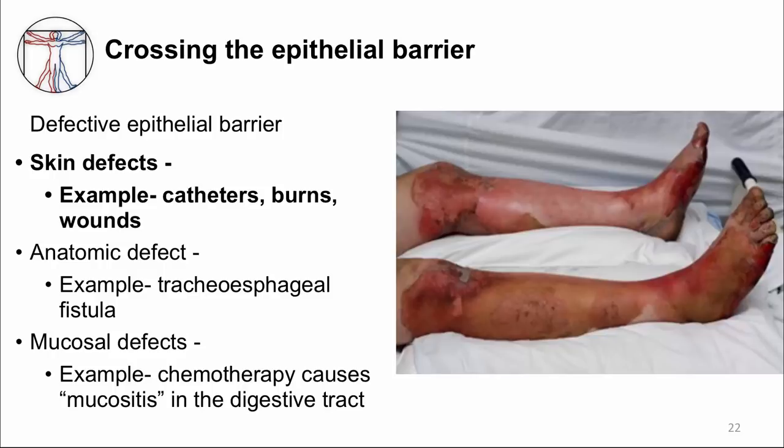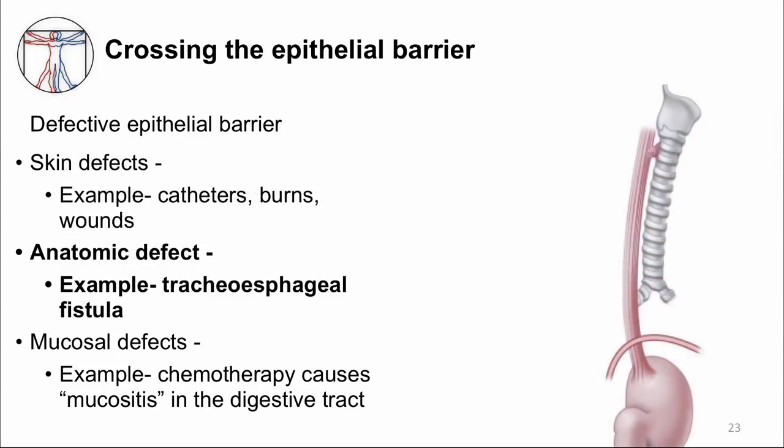The epithelium can also be defective from anatomic defects, which are not as obvious as a penetrating catheter or a burn. So it's important to remember this. In fact, if you have a patient with recurrent infections in the same anatomic location, you might want to think about a possible anatomic defect. Let me show you an example.